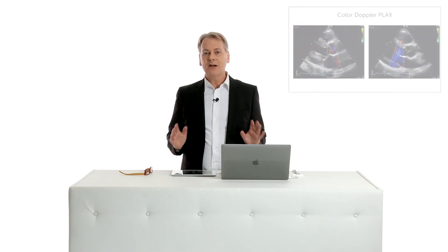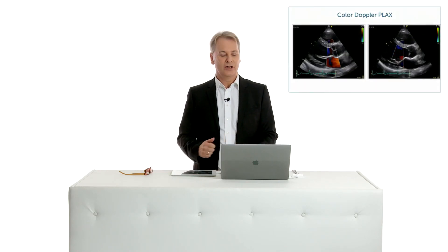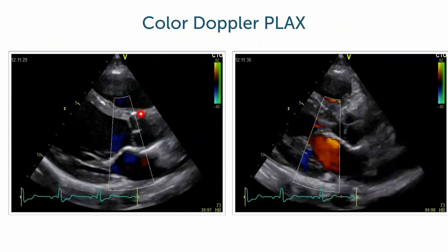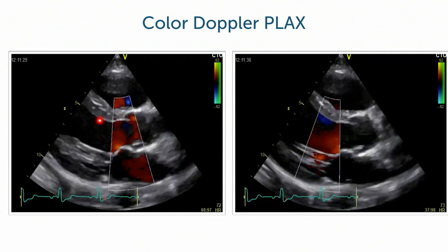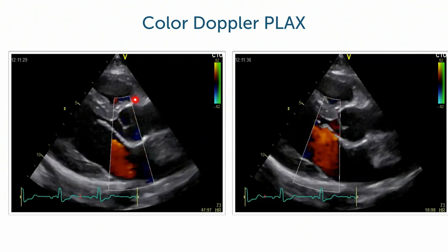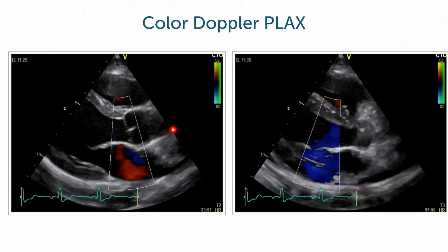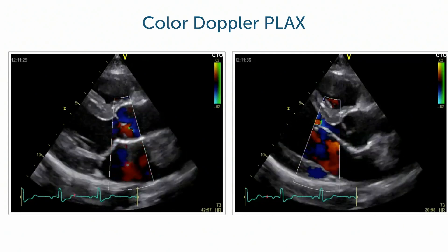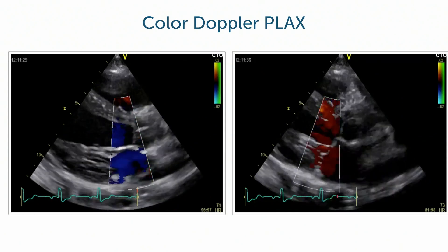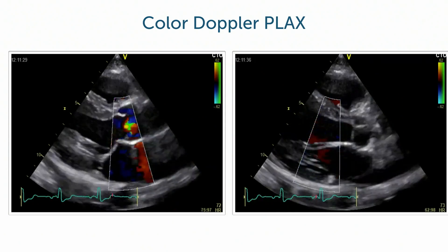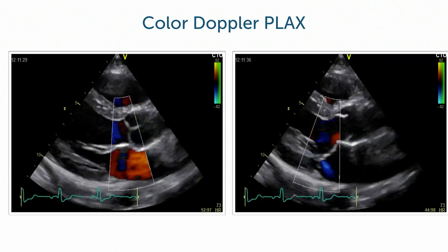We usually start with a parasternal long axis view, and that's also the first place we will use color Doppler. We'll look at flow across the aortic and the mitral valve. You might question why we're using color Doppler here, especially since we have a more or less perpendicular orientation to the flow across both valves. The reason is you still see the jets, and frequently you have eccentric jets, so you will get the best recording from these views.